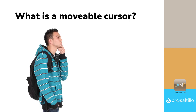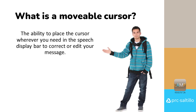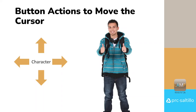So what is a movable cursor? A movable cursor allows you to place the cursor wherever you need it within the speech display bar to correct or edit your message. This can be done by directly placing the cursor where you want it in your message, or by using buttons within your vocabulary file to move the cursor to where it needs to go.